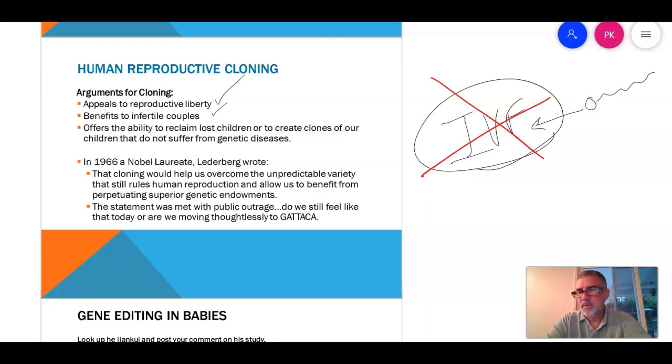They argue it would benefit infertile couples. So what would you do? Would you take the somatic cell from the man? Would you take it from the woman? Would it be treated differently? So if you made a genetic clone of your wife and you later didn't like your wife, would you treat your child differently? Because they're essentially the genetic duplicate of your wife. Same thing happens if you take a male. This one, I think, was just creepy. It offers couples the ability to reclaim lost clones of our children. And that's just not right.